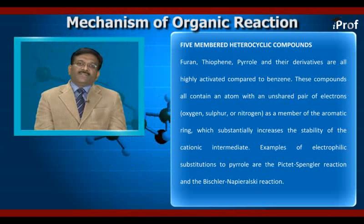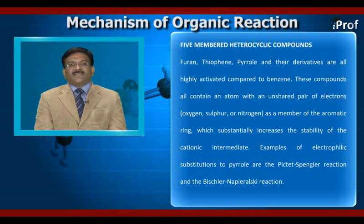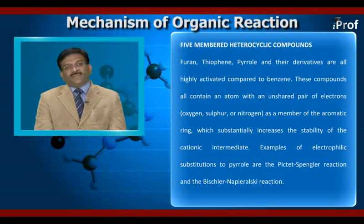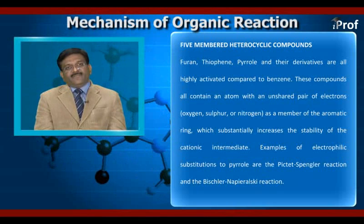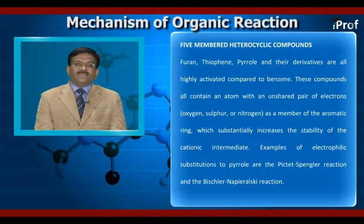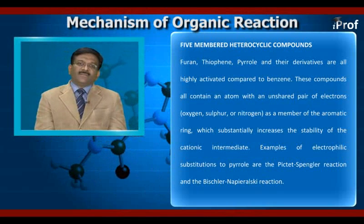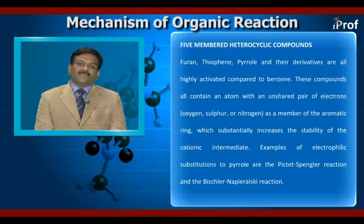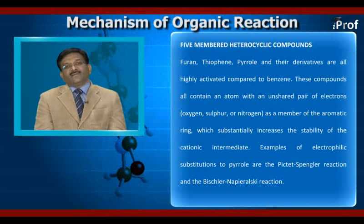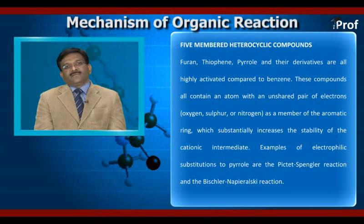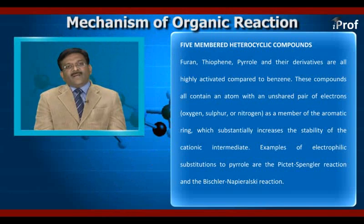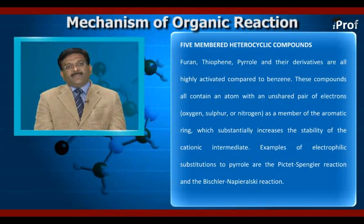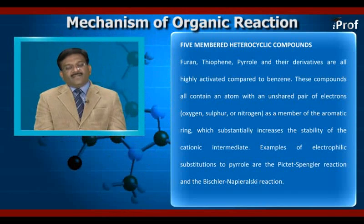This substantially increases the stability of the cationic intermediate. Examples of electrophilic substitutions to pyrrole are the Piptid-Spangler reaction and the Bichler-Napier-Rosky reaction.